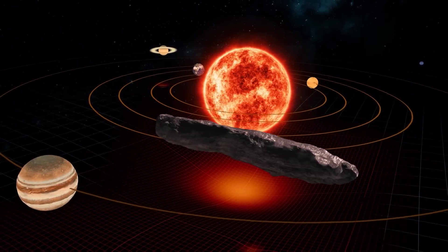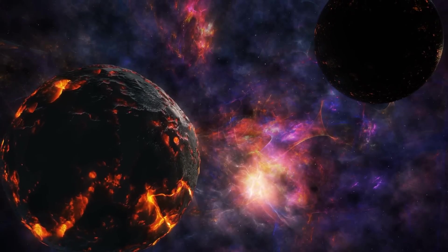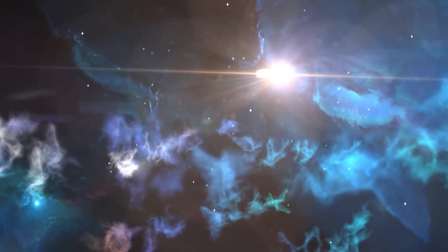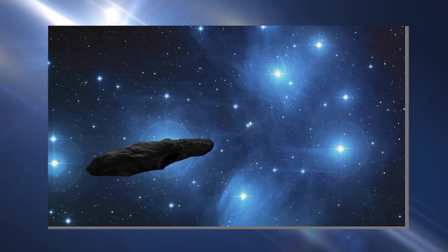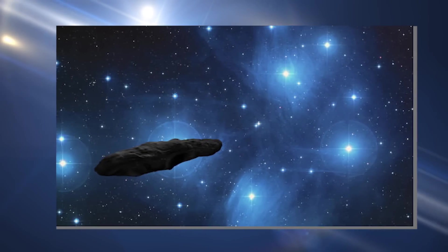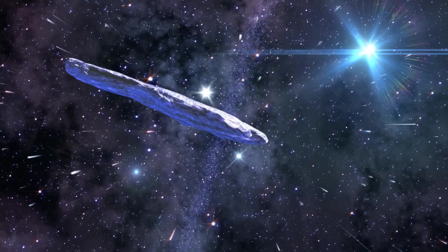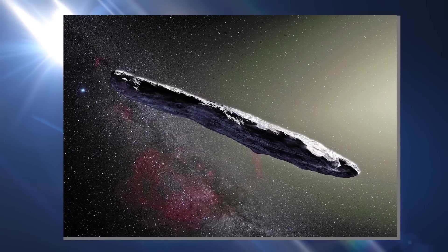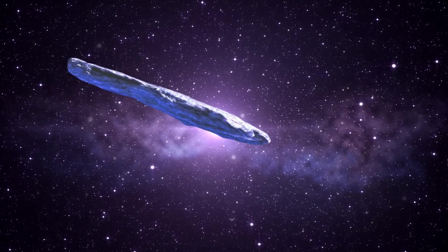Now, when objects like Oumuamua pass through the solar system, their motion is influenced by the Sun and the planet's gravitational pull. Because of this, astronomers can predict their trajectories based on these gravitational forces, and the objects should follow predictable paths. However, in the case of Oumuamua, astronomers noticed that its motion deviated slightly from what was expected based upon gravitational forces alone. This deviation suggested the presence of an additional force, hence the term non-gravitational acceleration.